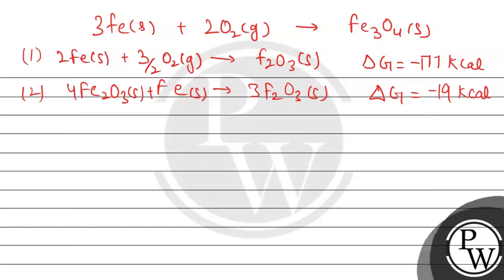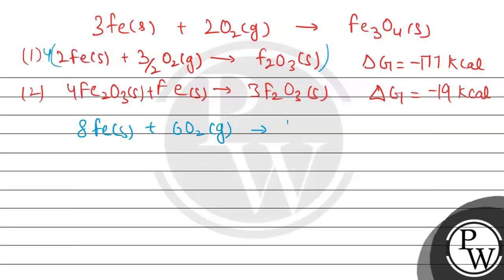Now, we will multiply the first reaction by 4, so its delta G value will also be multiplied by 4. First we will rearrange the reaction, then move to the delta G value. When we multiply the first reaction by 4, we get: 8 Fe solid plus 6 O₂ — since 4 multiplied by 3/2 gives 6 — leading to the formation of 4 Fe₂O₃.